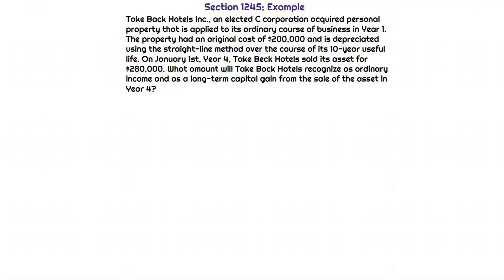Here's our section 1245 recapture example: Take Back Hotels, Inc., an elected C corporation, acquired personal property used in its ordinary course of business in year one. The property had an original cost of $200,000 and is depreciated using the straight-line method over a 10-year useful life. On January 1st of year four, Take Back Hotels sold the asset for $280,000. We want to know how much the company will recognize as ordinary income and as long-term capital gain upon the sale.